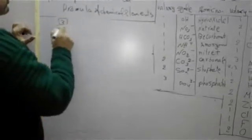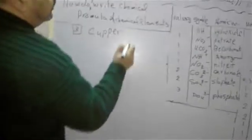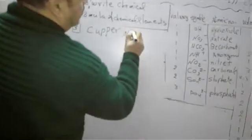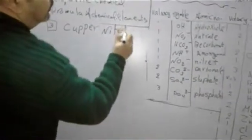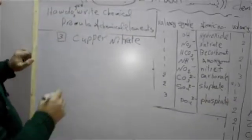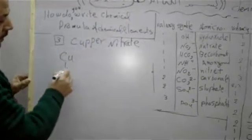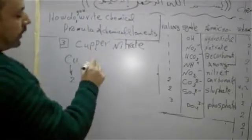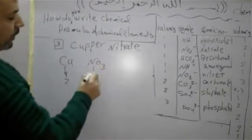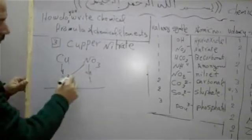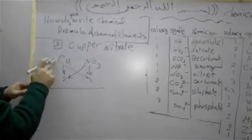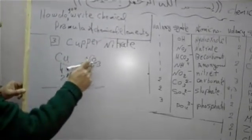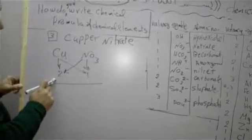Example three, copper nitrate. Copper Cu, its balancing two. Nitrate NO3, its balance one. Copper will take balance of nitrate. Nitrate will take balance of copper.